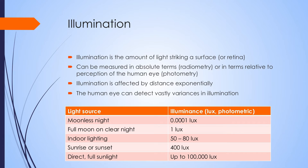Illumination is another property of light — the amount of light striking a surface, or in our field generally the amount of light striking a retina. It can be measured in absolute terms, which is radiometry, or in terms relative to perception of the human eye, which is called photometry. Illumination is affected exponentially by distance — for every meter further away, you lose the amount of light by the square of the distance. The human eye can detect vast variances in illumination. On a moonless night there's 0.0001 lux of light; a full moon provides 1 lux, which is 10,000-fold more; indoor lighting is 50 to 80 lux; and direct full sunlight can be up to 100,000 lux.